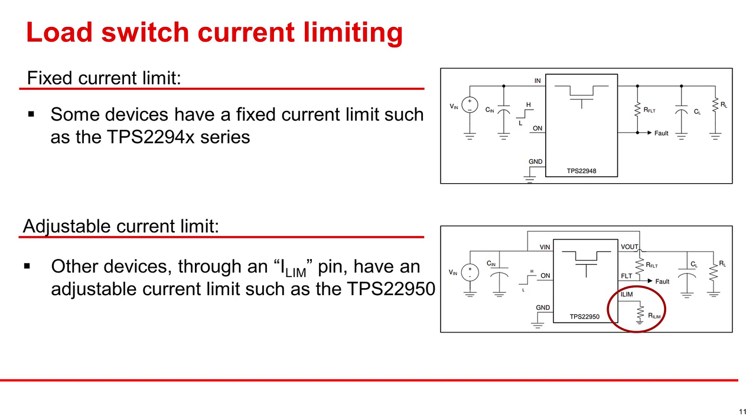We have two different types of devices with current limit: ones with fixed current limit, and ones with an adjustable current limit through resistance to ground on an ILIM pin, as you can see on the right-hand side.